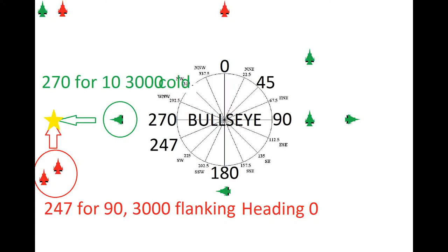For example, if I say 'from bullseye 247 for 90, 3000, flanking,' everyone knows where that is from the bullseye. But if I didn't say bullseye and just said '247 for 90 at 3000 flanking,' you'd think they're a little behind and to the left of you — completely different location. One could be miles away and the other is relative to your own aircraft. To get used to this, I heard someone uses the trick of a whiteboard next to them with compass points marked out similar to what you see on screen. When someone makes a BRA call, they mark out the point on the bullseye and their own location to get a bird's-eye view of what's going on.